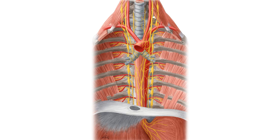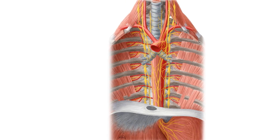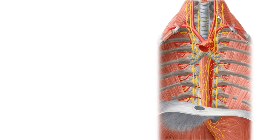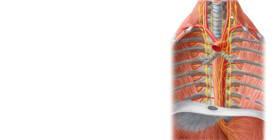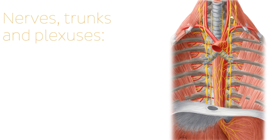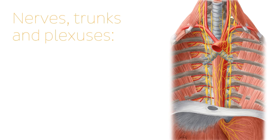Now the esophagus, as you probably know, is a long fibromuscular tube that connects the pharynx with the stomach. Here on this image, all the yellow structures consist of different nerves, trunks, and plexuses that we're going to be talking about.